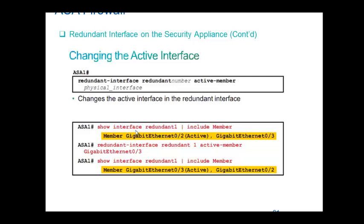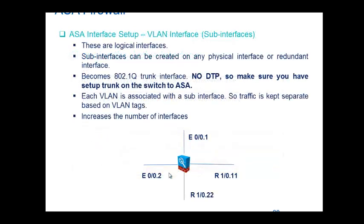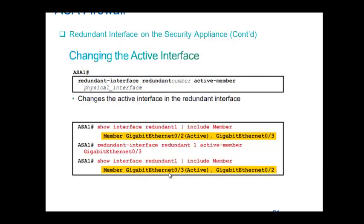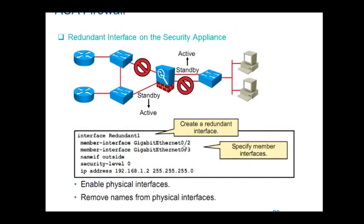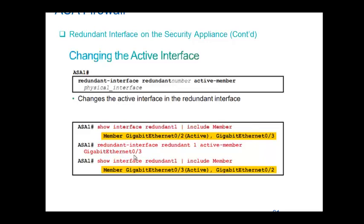Verification commands: 'show interface redundant 1' shows which is active and which is standby. For example, G0/2 is active and G0/3 is standby. You can manually change G0/3 to active using the command 'redundant-interface redundant 1 active member G0/3'. By default, whatever interface you configure first becomes active; the second interface becomes the standby. You can use this command to change it.